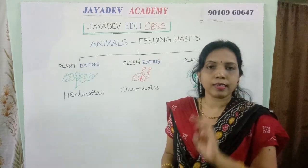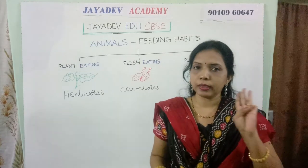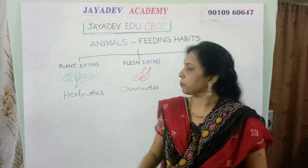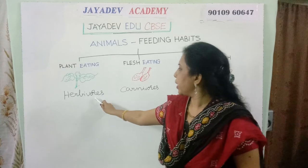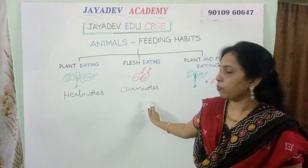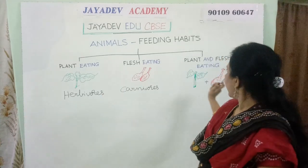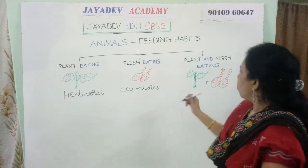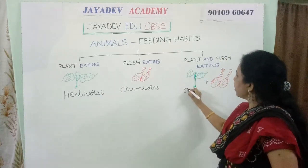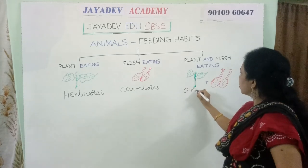So, animals are divided into three types: herbivores, carnivores, and omnivores.